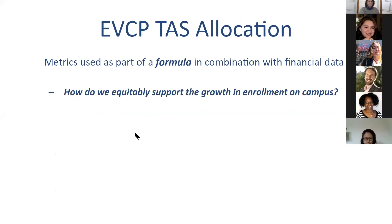The EVCP task allocation, on the other hand, is a formulaic allocation used to answer the essential question: how do we equitably support the growth in enrollment on campus — or declines — within particular units? Historically, we've done more incremental budgeting where everybody went up a certain amount. But in recent years, as campus has grown a lot, we've made a real effort to make this more standardized and fairer.